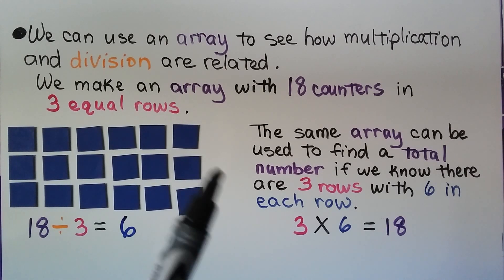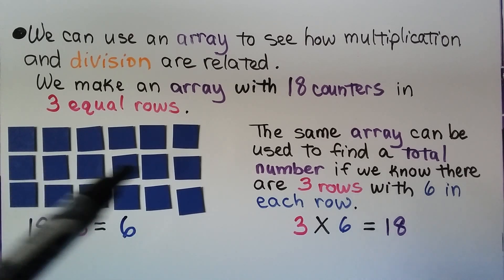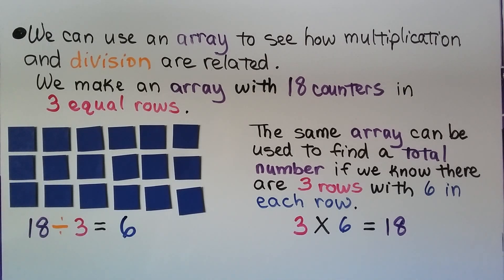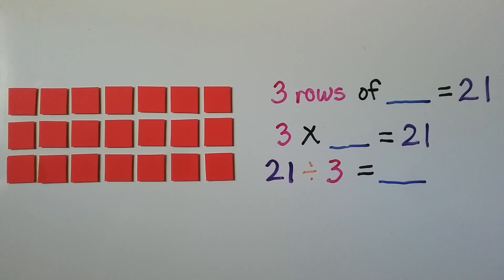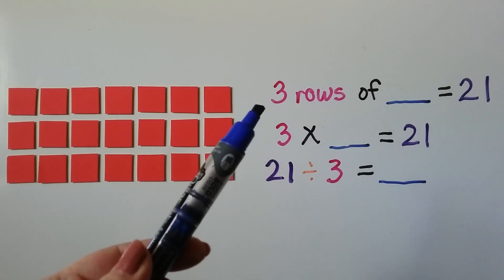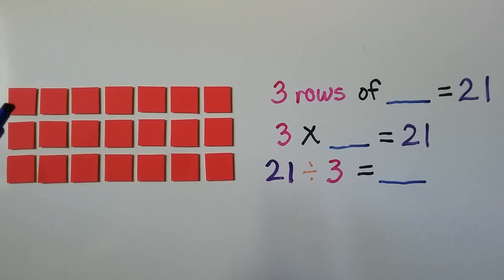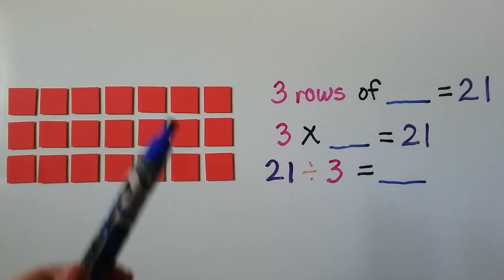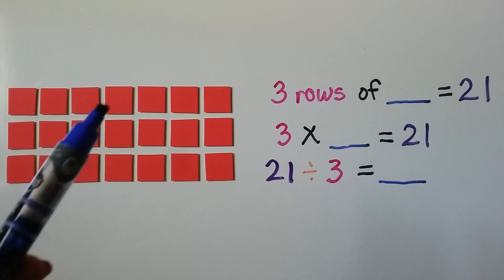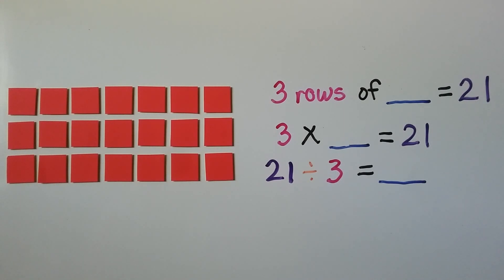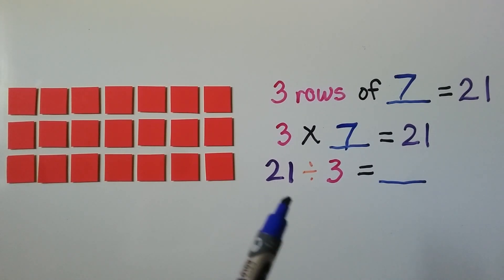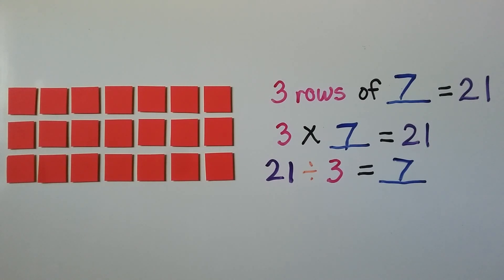The same array can be used to find a total number. If we know there are three rows with six in each row, we can count them to know that three times six is equal to eighteen. Multiplication and division are related. Here we have an array with three rows of blank equal to twenty-one. There are twenty-one counters; we count how many are in each row: one through seven — there are seven in each row. We have three rows of seven, which equals twenty-one. That means three times seven is equal to twenty-one, and it also means twenty-one divided by three is equal to seven. We can see how multiplication and division are related — they are inverse operations of each other.